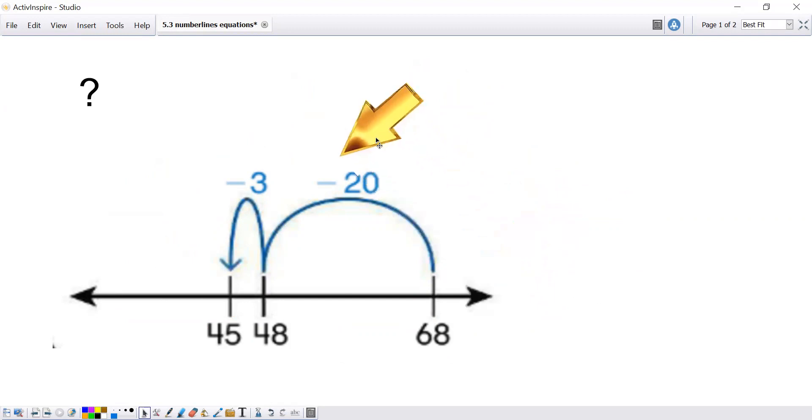Now in our number line, we notice that there's these subtraction marks. So that means the number is changing and it's decreasing because numbers are going away. The clue I have is it starts at 68. So if I were to make an equation, the first thing I would do is put 68 because it's telling me it's beginning with 68. Now it says the number is decreasing or moving to the left.